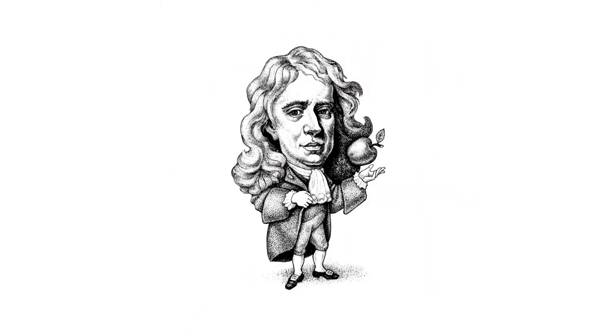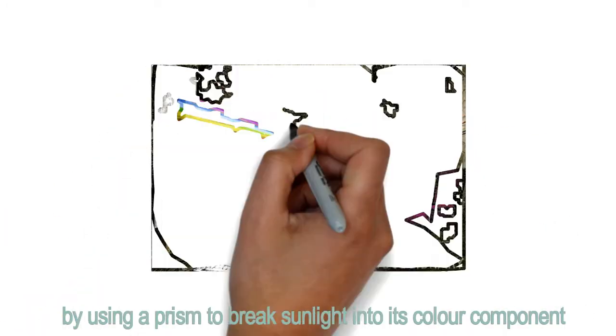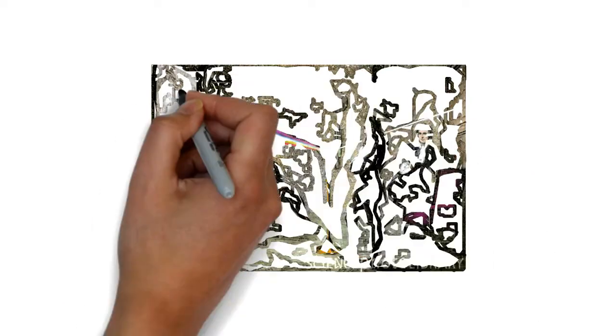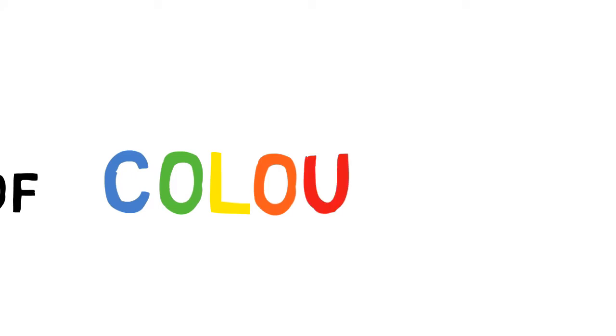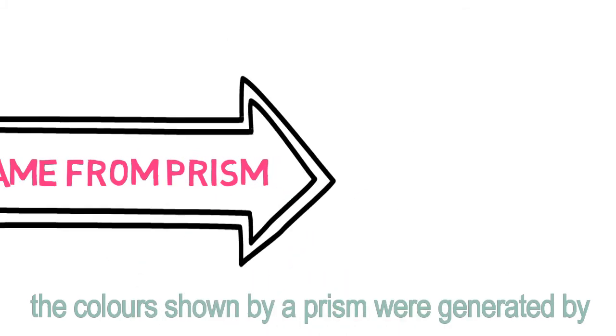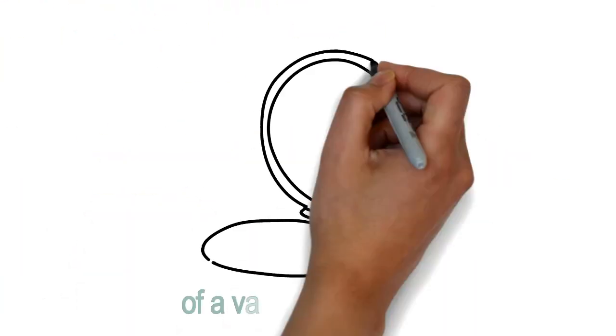Now let's see the history of the light spectrum. Isaac Newton discovered that light from the sun was composed of multiple frequencies. In 1666, by using a prism to break sunlight into its color components and then recombining them with a second prism, it showed that the light coming from the sun consists of a continuous array of colors. Until then, some believed that the colors shown by a prism were generated by the prism itself and were not inherent to sunlight.